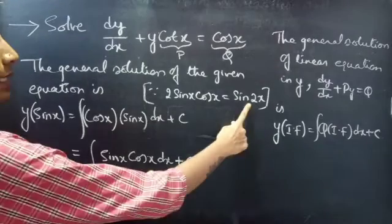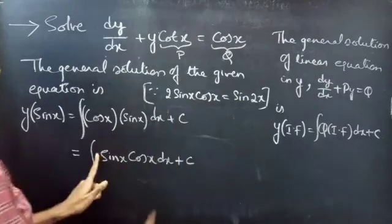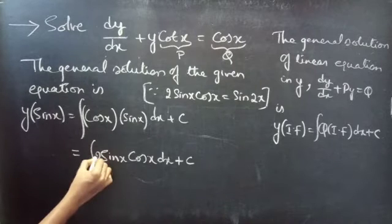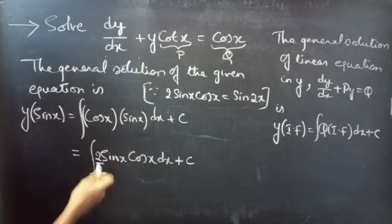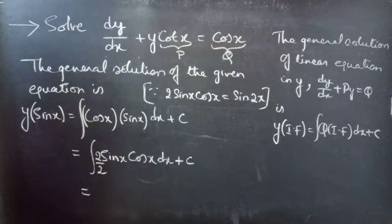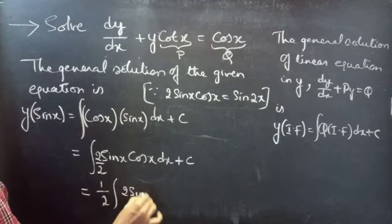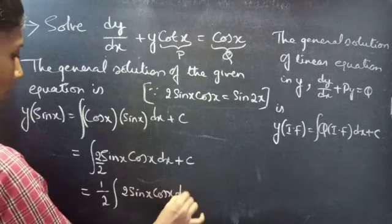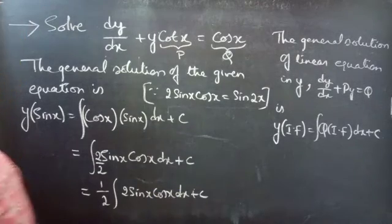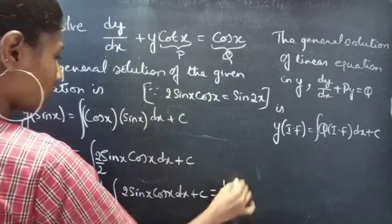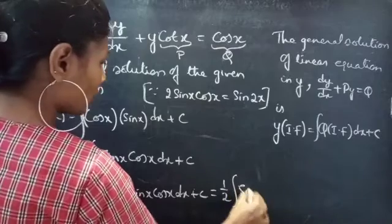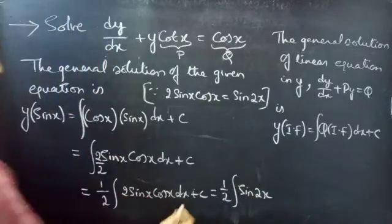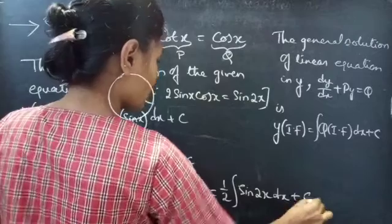In order to replace this by sin 2x we need a 2 here. For that purpose, we will multiply and divide by 2 inside the integral, then take 1/2 outside, giving us 1/2 times the integral of 2 sin x cos x dx, which can be replaced by sin 2x, plus c.